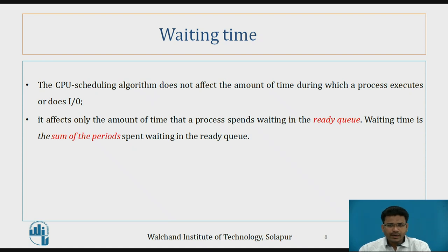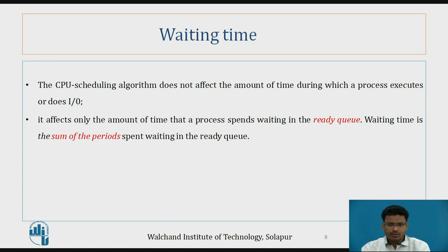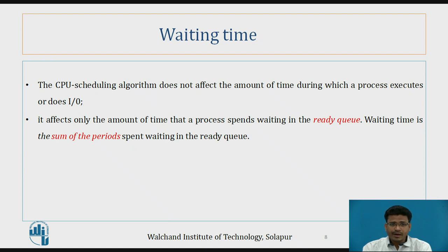Now waiting time: when different processes come for execution in main memory, all these processes are in the ready queue. But due to some interrupts or higher process priorities, these processes wait. Waiting time affects only the amount of time a process spends waiting in the ready queue — it is the sum of all periods spent waiting in the ready queue.